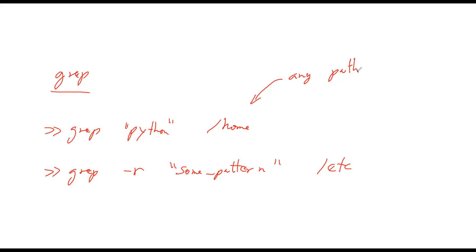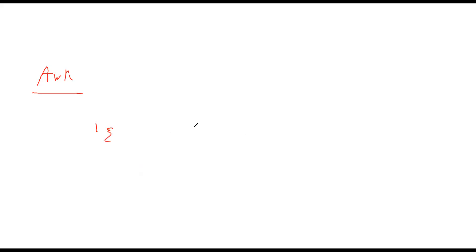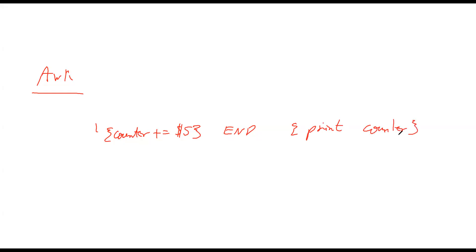With awk you can do more operations — counters, sums, averages. For example, to count values in a column: awk '{counter += $5} END {print counter}'. You process each line, accumulating column five, and then in the END block you print the result. This allows you to do calculations and then print out the results.